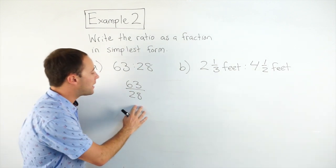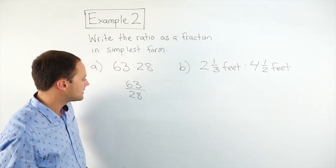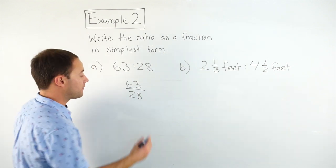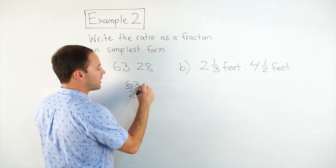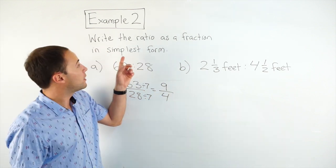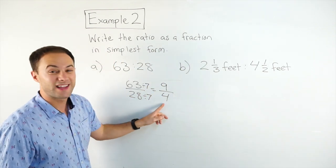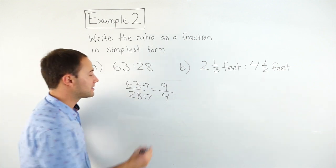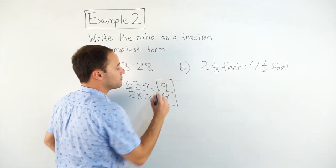And now I just have to simplify. A common factor of 63 and 28, 7 would be a common factor. So if I divide by 7, divide by 7, I would get 9 over 4. They want it as a fraction in simplest form. That's a fraction. I won't change it to a mixed number, and that is in simplest form.